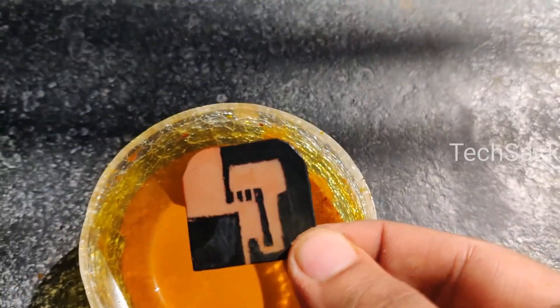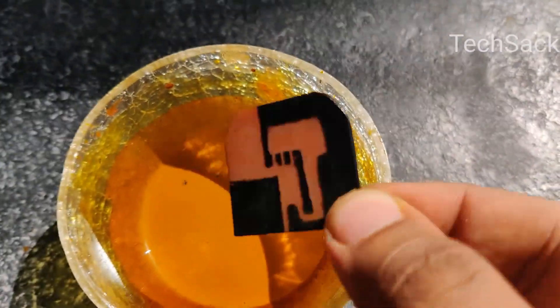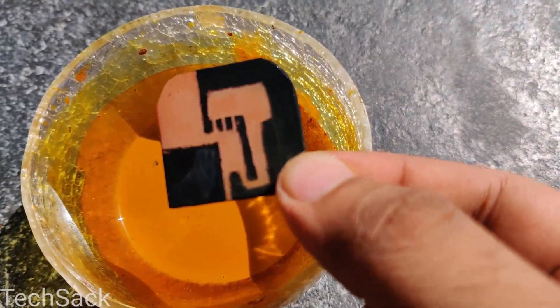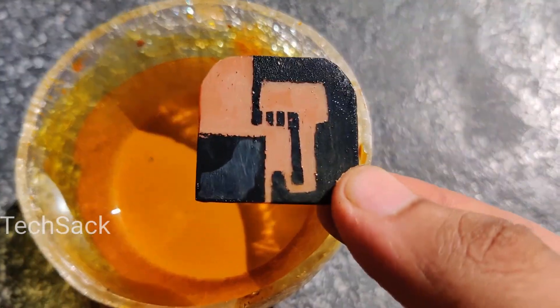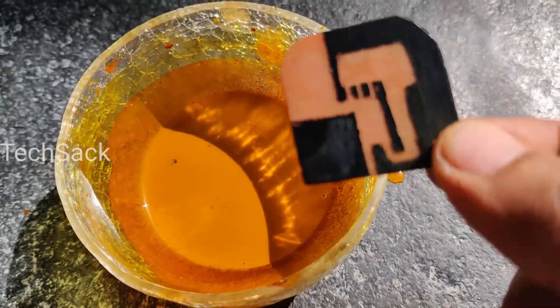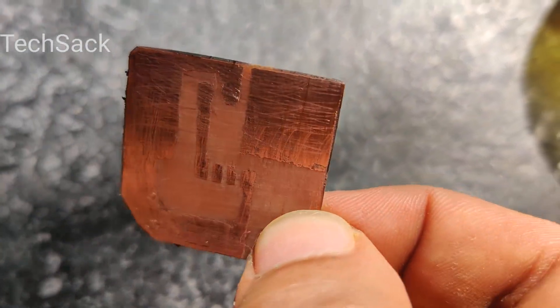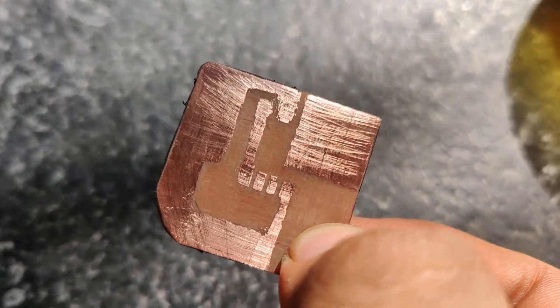This is how the PCB looks after the etching is completed. The extra copper which was exposed has disappeared in the ferrous chloride solution. This is the final piece of PCB after the paint has been taken out.